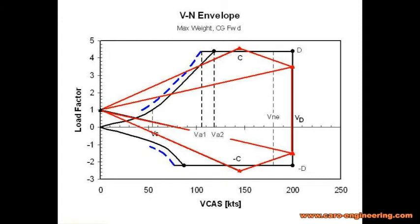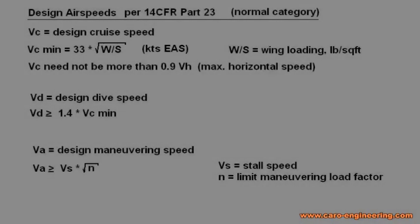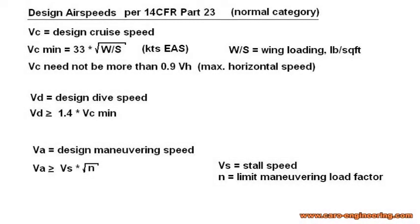A similar envelope is defined for gust loads, shown here in red, which are loads inflicted upon the airplane when it flies through severe turbulence. The regulations also have requirements for the minimum design air speeds, such as VC, VD, and VA. These speeds are based on the wing loading, stall speed, and the maneuvering load factor. Using the formula shown in this example ensures that the speed limits are appropriate to the airplane design. The formulas shown are for the normal category; the minimum speeds for other categories may be different. You can also select higher limits than the minimums.